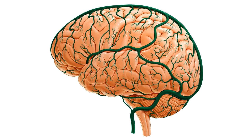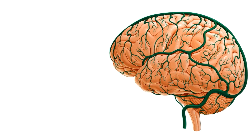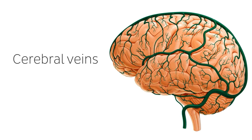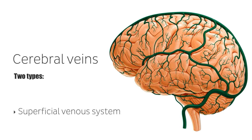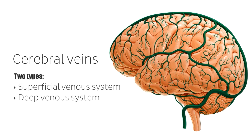Before we go on to talk about the superficial veins of the brain, I first want to introduce you to the concept of the cerebral veins in general, that is, the veins that drain the parenchyma of the brain. It's important to note that unlike the veins of the rest of the body, the veins of the brain are thin-walled and valveless. There are two types of venous systems found within the cerebral brain: the superficial venous system, which primarily drains the grey matter of the brain, and the deep venous system, which drains the deep structures of the brain and the white matter of the cerebral hemispheres.